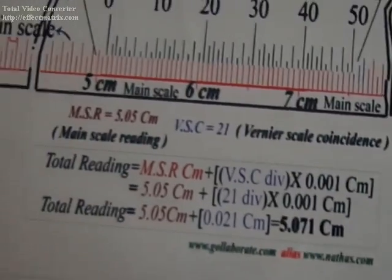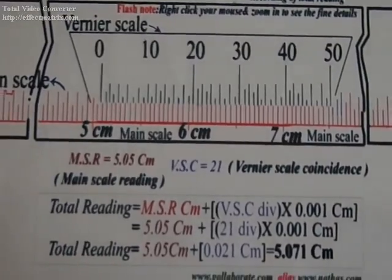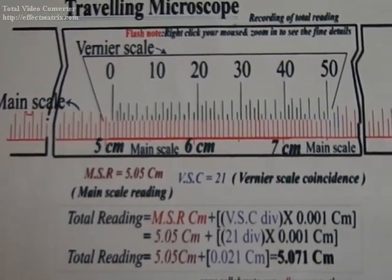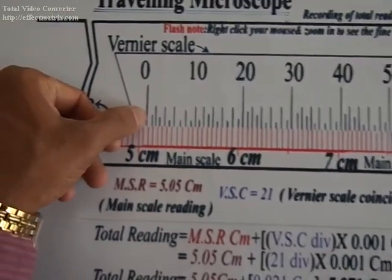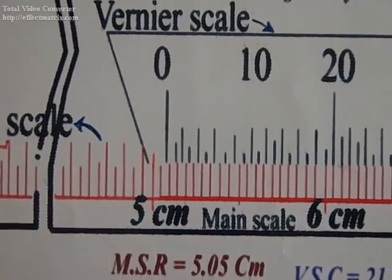So moving on to the reading. Here a sample reading is shown. The vernier scale zero is to be watched clearly.